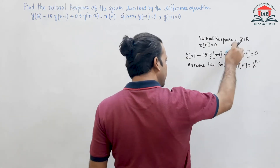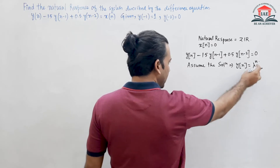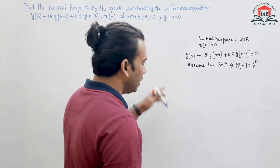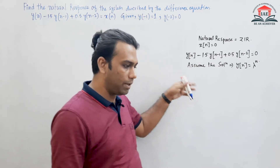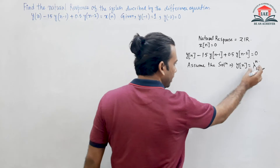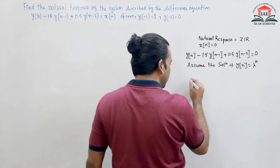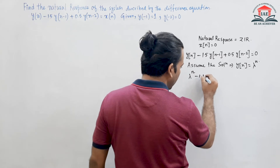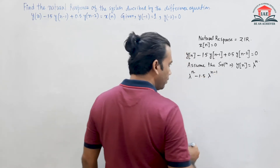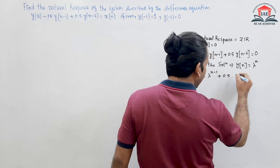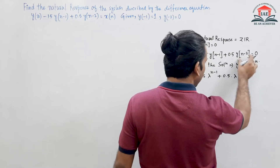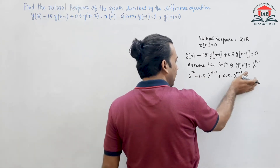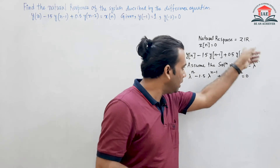If we substitute this assumed solution y(n) = λⁿ into the homogeneous difference equation, we get: λⁿ - 1.5·λⁿ⁻¹ + 0.5·λⁿ⁻² = 0. Taking λⁿ⁻² common from this equation gives us the characteristic equation.